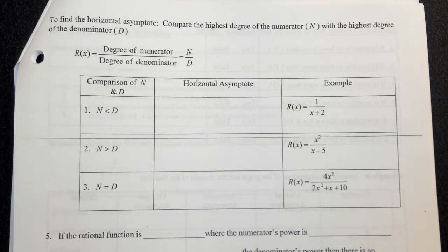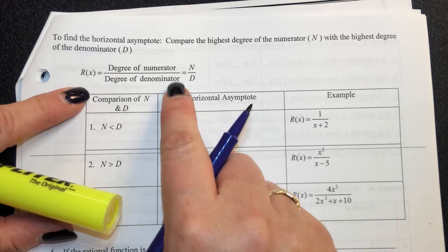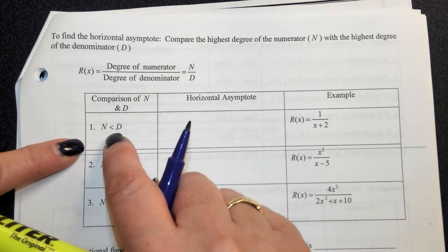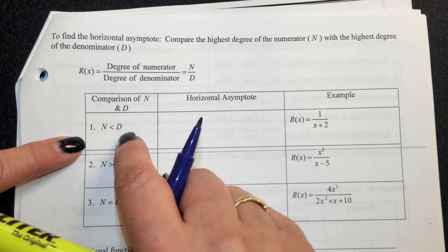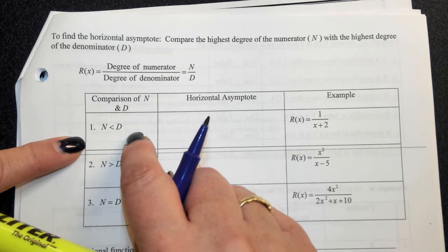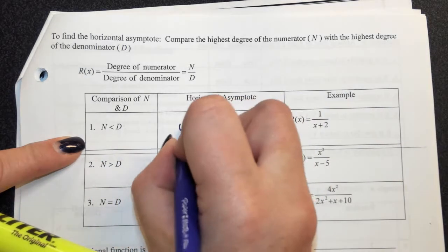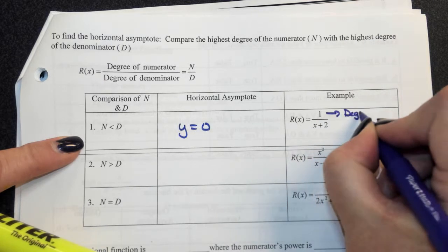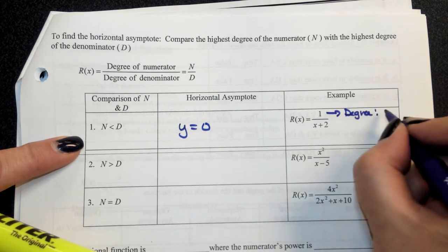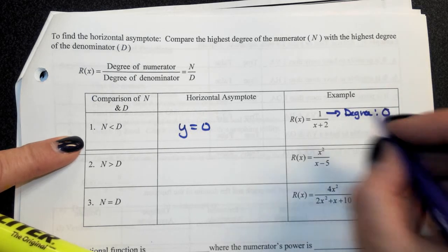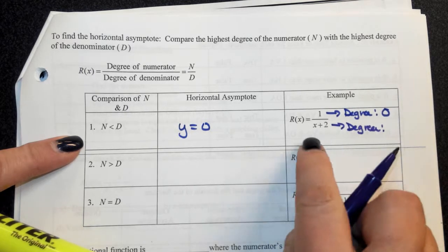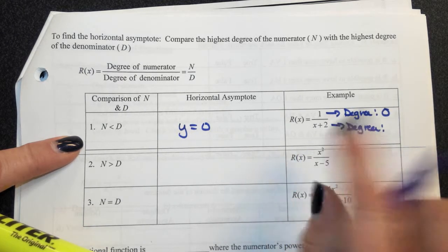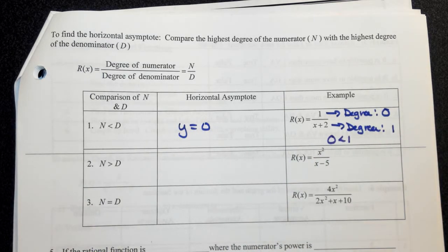Review of the rules for finding horizontal asymptotes: compare the degree of the numerator with the degree of the denominator. If the degree of the numerator is less than the degree of the denominator, the horizontal asymptote is at y equals zero. For example, the degree of the constant 1 is zero, and the degree of x plus two is one — since zero is less than one, the horizontal asymptote is at y equals zero.